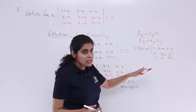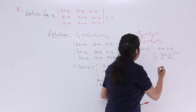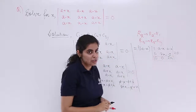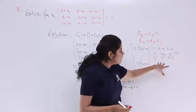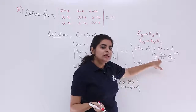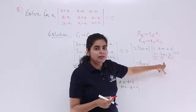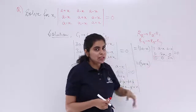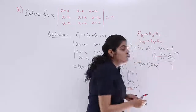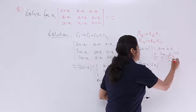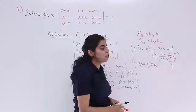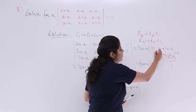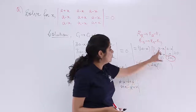Now evaluation will be very easy because we have maximum zeros in row 3. Evaluating along row 3: the first two entries are 0, so they are ignored (0 times anything is 0). The third entry is 2x, at position (3,3), so the sign is positive. The cofactor sub-determinant (ignoring row 3 and column 3) is [1, (a−x); 0, 2x]. Cross-multiplying: 1 × 2x − 0 × (a−x) = 2x. So the expression becomes (3a − x) × 2x × 2x = 0.